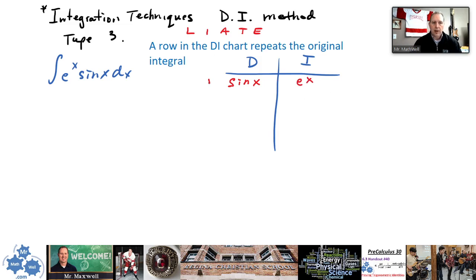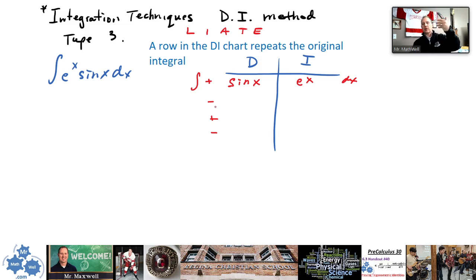So we remember our plus, minus, plus, minus signs. Each row is an integral — that first row is our original integral, I've just put it in the chart. Now I take the derivative of sine x, which is cos x — nice and neat. And the integral of e to the x is simply e to the x.